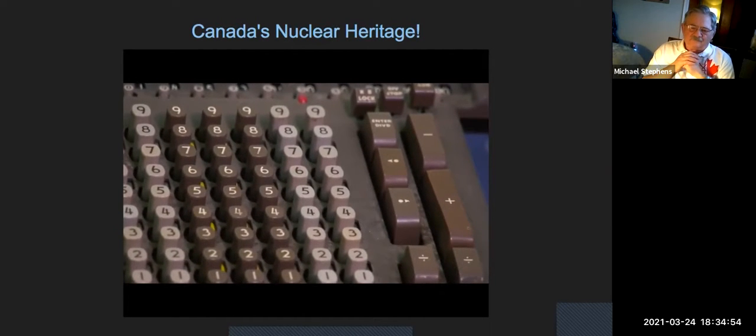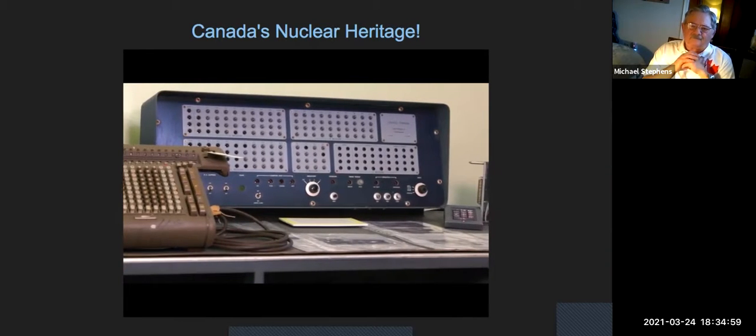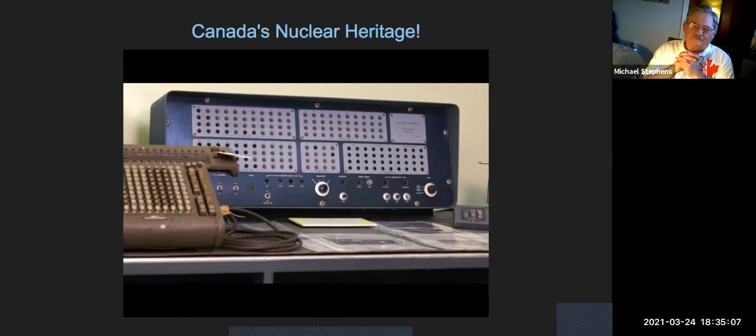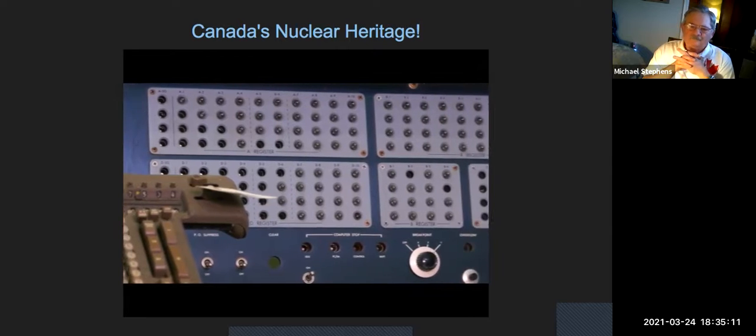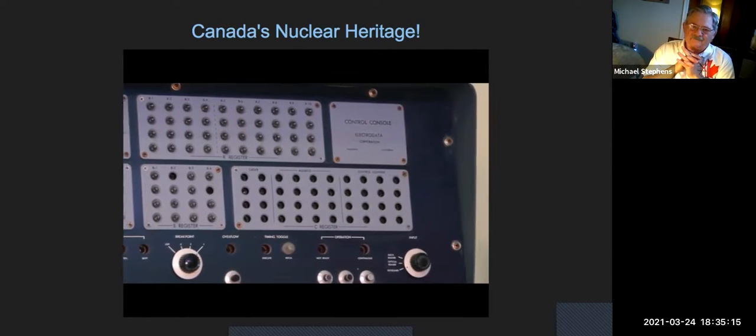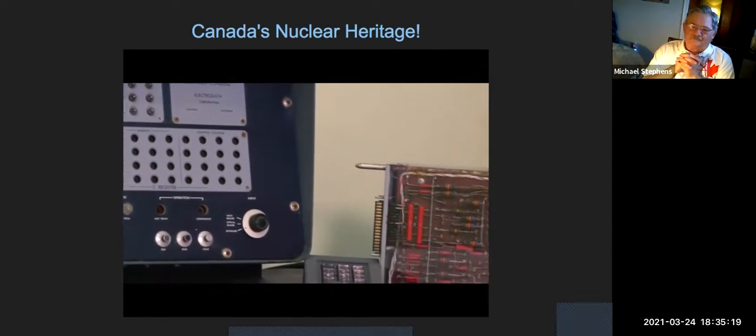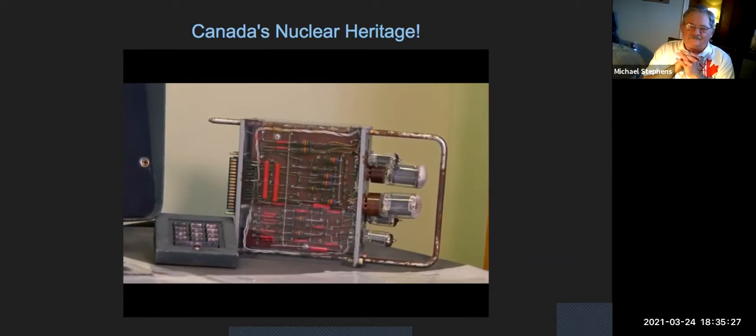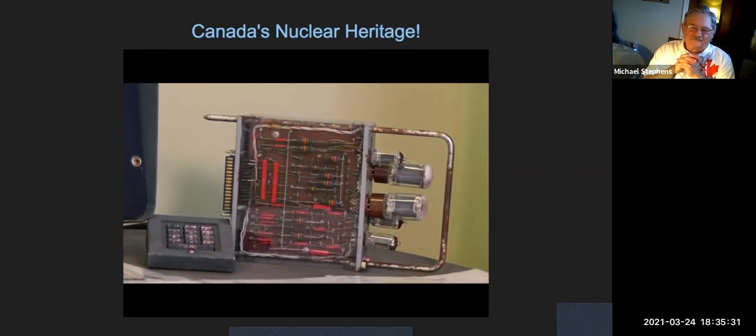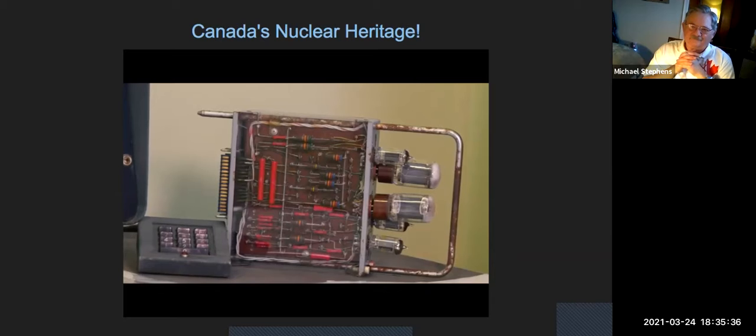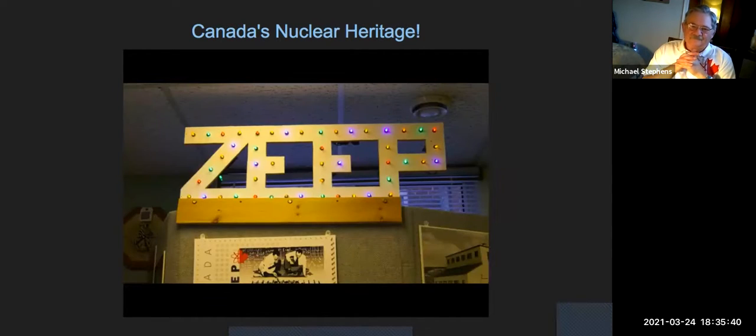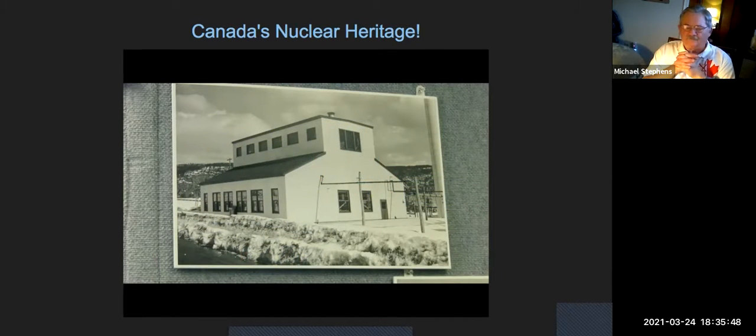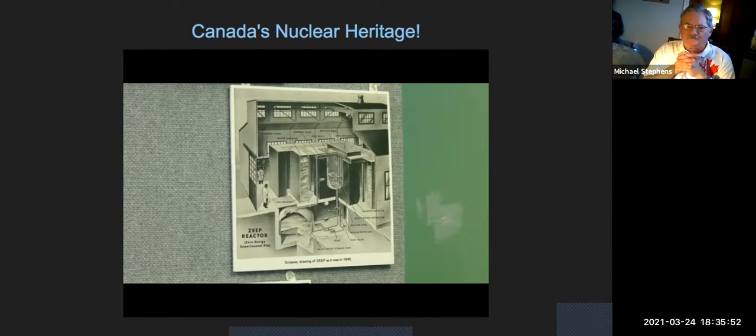Off to the right, this impressive looking module with a big blue background is the Datatron computer. It was the first electronic computer used at Chalk River Labs. It was based on vacuum tubes, not transistors. This was back in the 1950s. And it had all the data storage anyone could hope for. On the right of the display on that side is one of these storage modules. And this impressive array of tubes and resistors and such was capable of storing one whole byte. And the computer had about 155 of them. Glorious storage capacity. ZEEP, the Zero Energy Experimental Pile, the first Canadian reactor and the first reactor to go critical outside the United States. ZEEP went critical on September 5th, 1945.